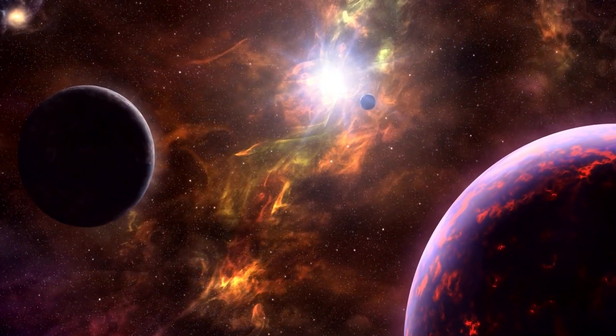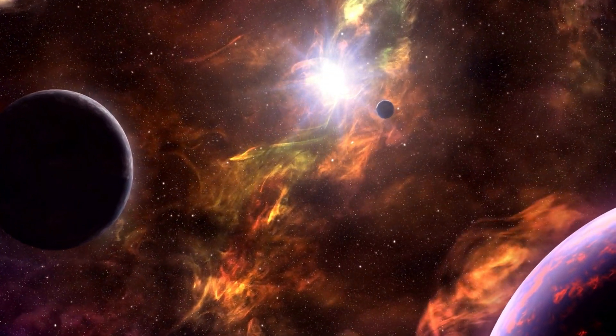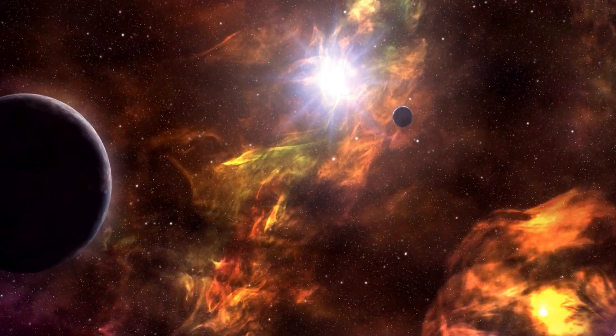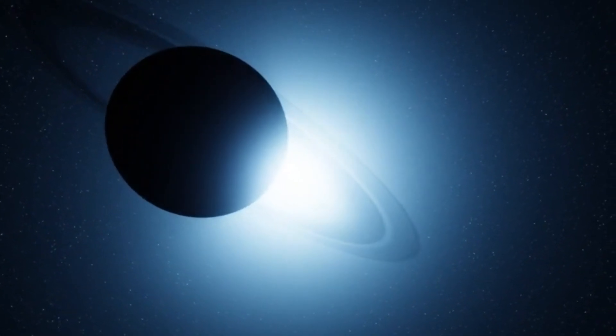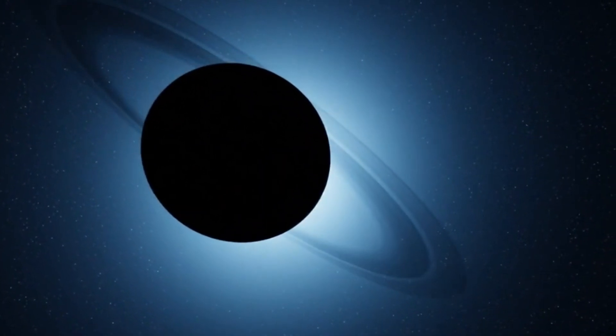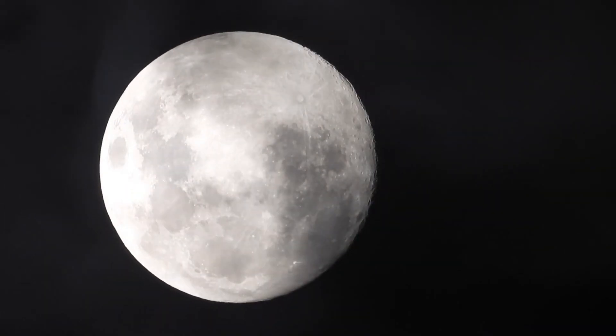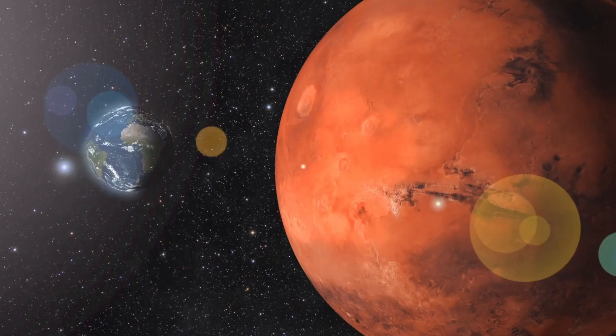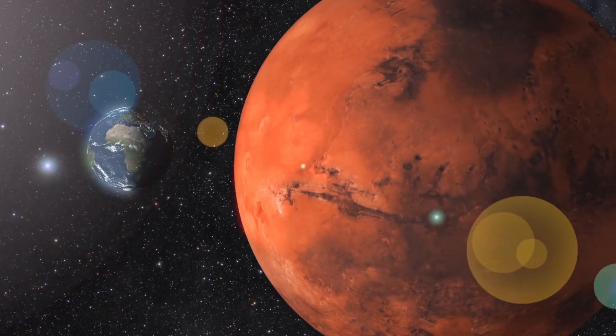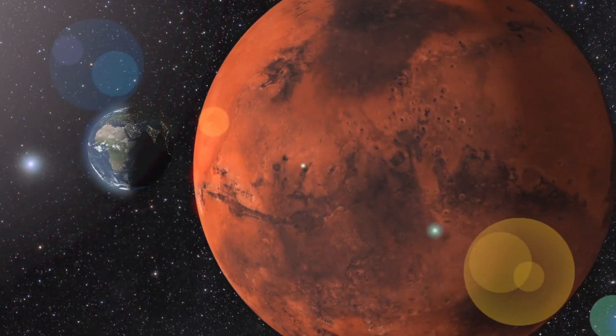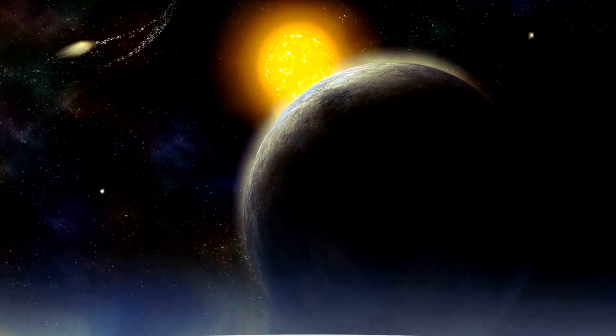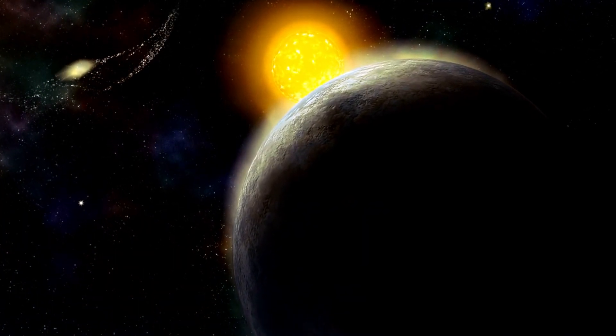Sagan didn't give up, and it paid off. On Valentine's Day in 1990, Voyager 1 turned its camera back towards the inner solar system and took 60 pictures. The most famous one is called the Pale Blue Dot. It was taken from 3.8 billion miles away, making it the farthest picture ever taken of our planet. In the photo, Earth looks tiny, like a pale blue dot in the huge space around it.